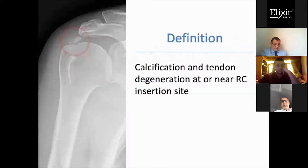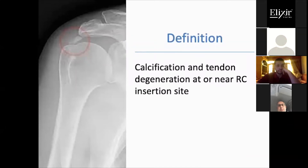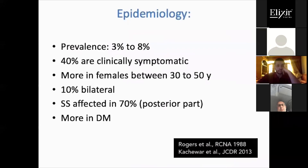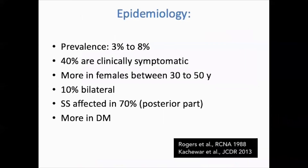Calcified tendinitis is defined as calcification and tendon degeneration at or near the rotator cuff insertion site. Its prevalence is about 3 to 8 percent, of which only 40 percent can be symptomatic. It's more common in females between 30 to 50 years of age and can be bilateral in 10 percent of cases. It usually affects the supraspinatus tendon, especially the posterior part, and diabetes is a common association.